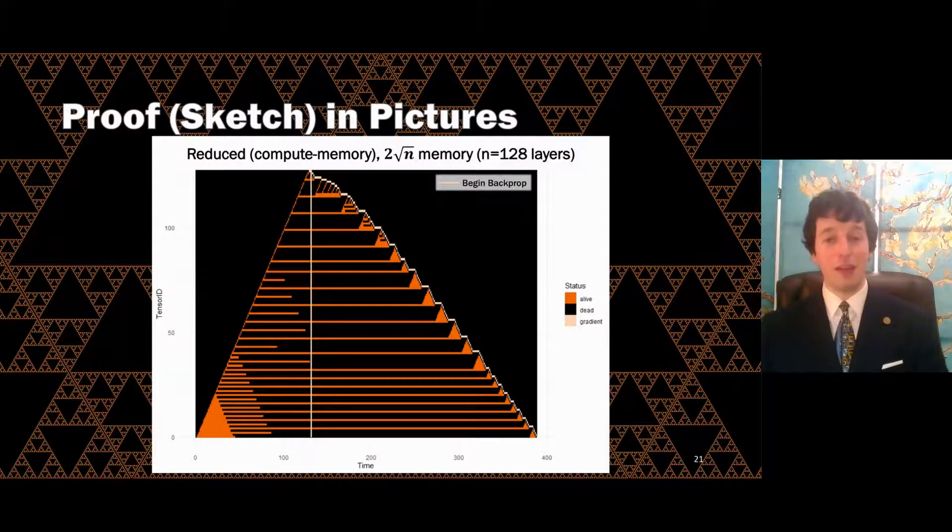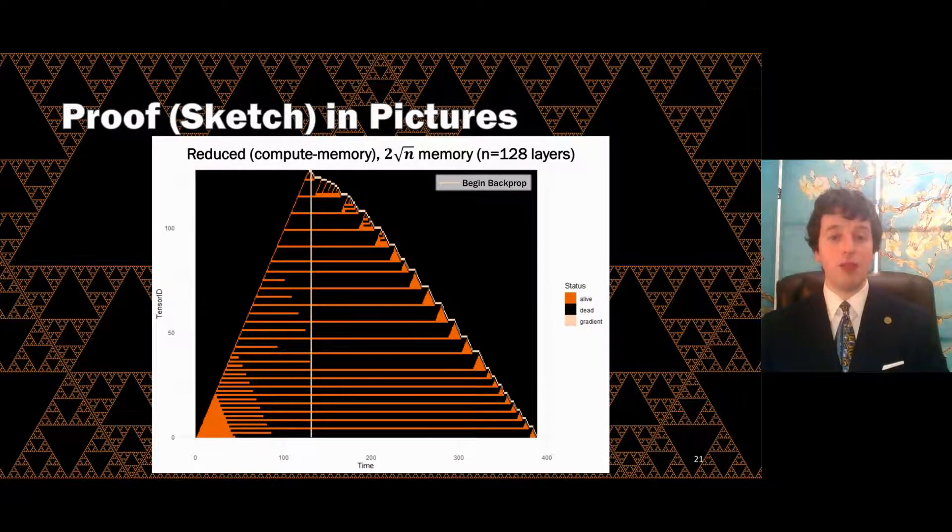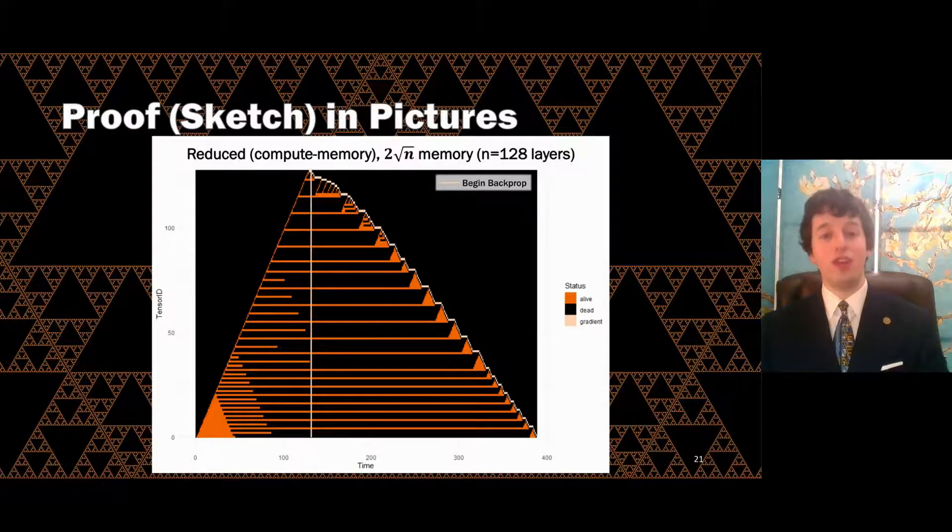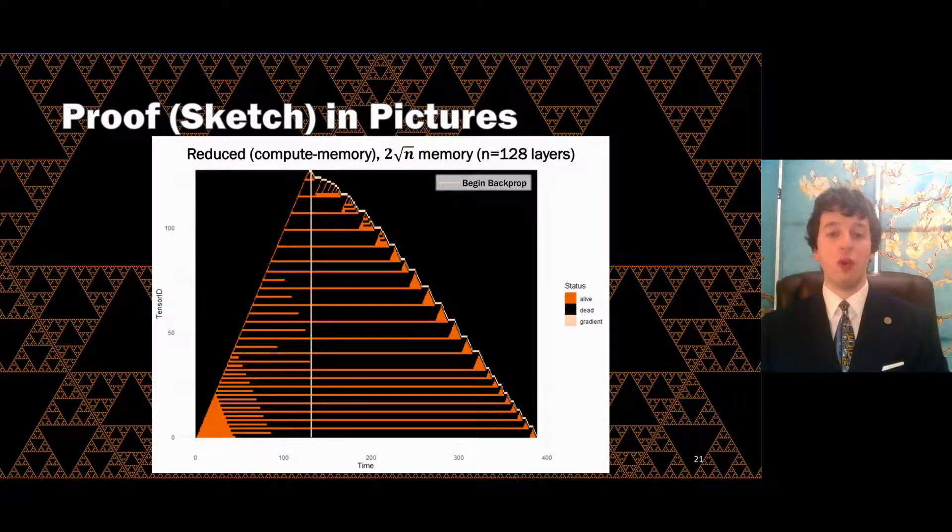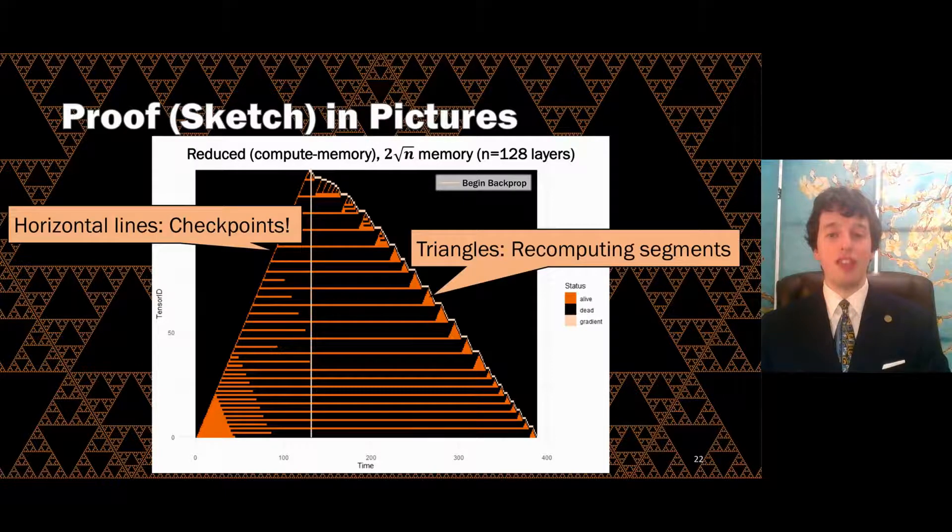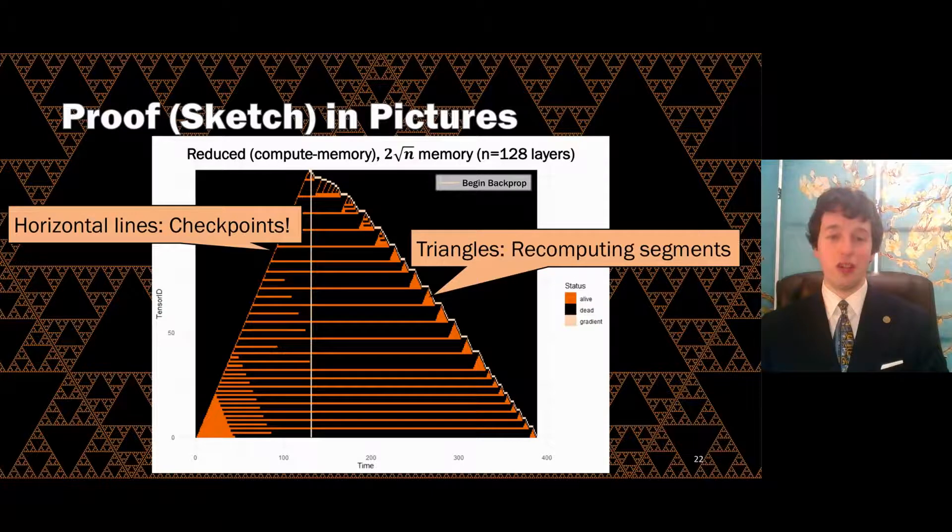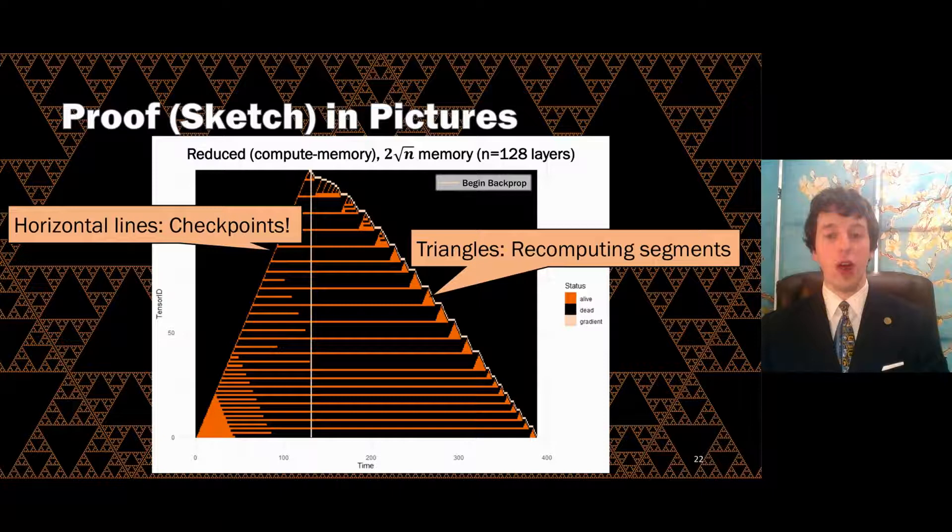And now for the graphic that motivated this presentation's background. To give some intuition for the full proof in the paper, here's an illustration of a simulation of DTR training an n-layer feedforward network on a budget of square root n, assuming, as in the gradient checkpointing paper, that each tensor has unit cost in both computation and memory. The orange pixels show which tensors are live at which point in the computation. What is interesting about this behavior is that DTR is emergently reproducing behavior similar to the Chen gradient checkpointing technique.